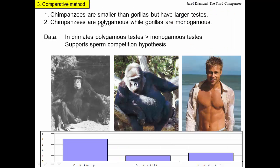Returning to the testes size study, we have pretty good evidence that in primates, polygamous species' testes tend to be larger than those of monogamous species, supporting the sperm competition hypothesis. This figure shows testes size of chimps compared to gorillas — chimp testes are about four times bigger than gorillas. Humans are a bit more gorilla-like than chimp-like in terms of testes size, which is actually interesting, because it suggests that ancestral human behavior was probably more monogamous than polygamous. For most of our evolutionary history, humans have probably not had much sperm competition.